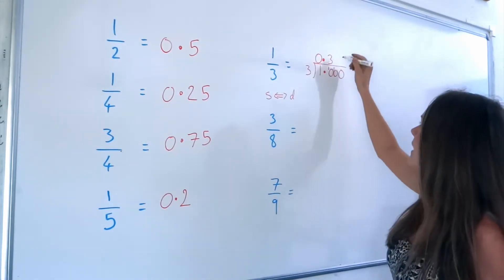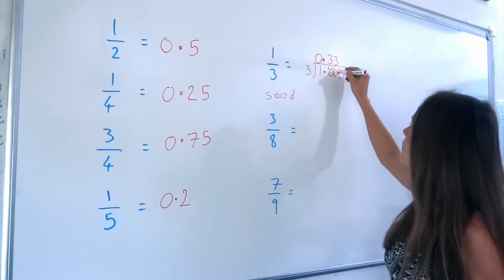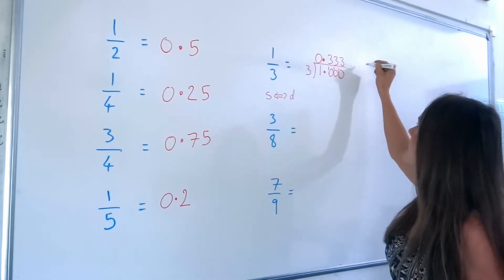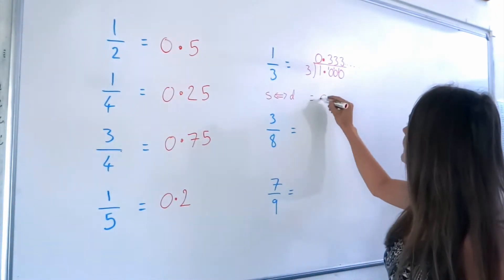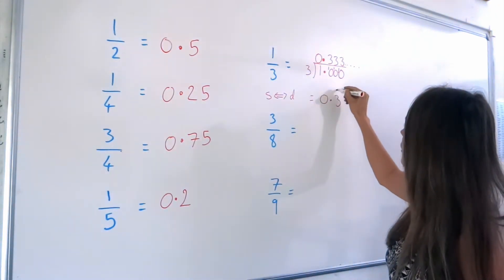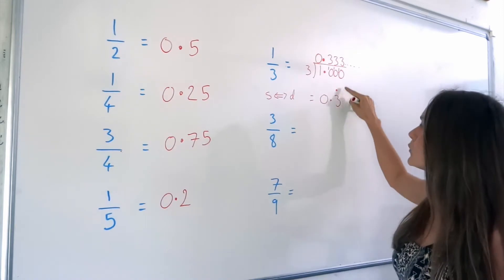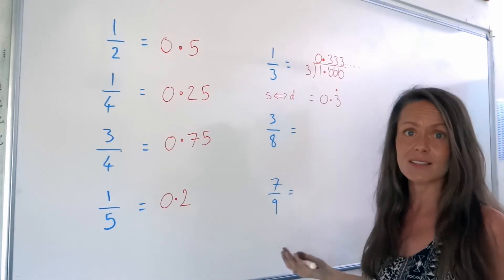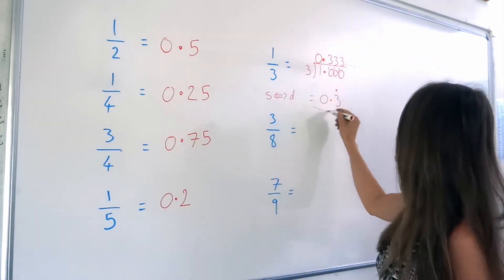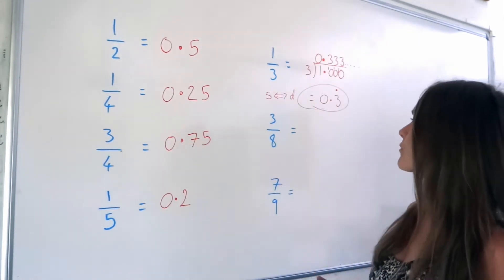So it's the same question again. How many 3's in 10? Well, 3 again, remainder 1. So these 3's keep going on and on and on. So we say it's 0.3 recurring as a decimal. And so if you see that dot above the number, it means exactly that. It means the 3's are never-ending in that decimal. So there's the answer to the first one, 1 over 3.